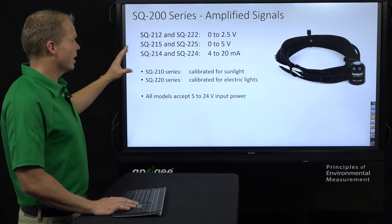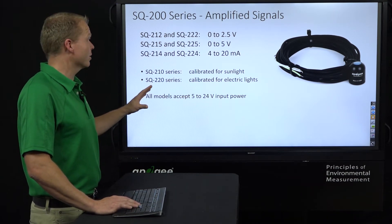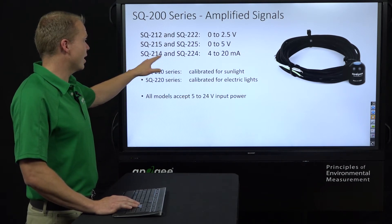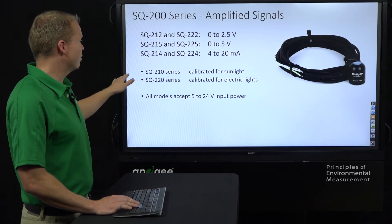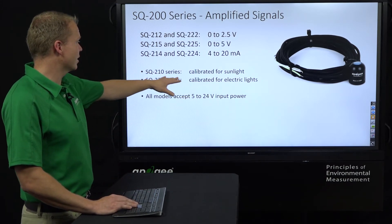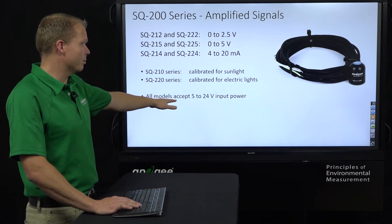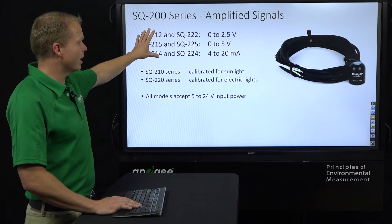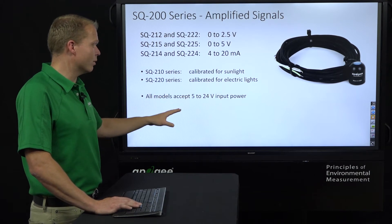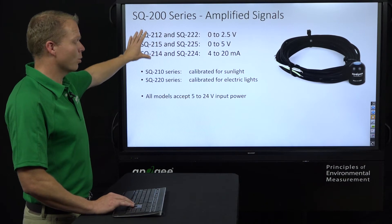The SQ200 series takes that same sensor and amplifies it into a voltage usable on your logger. The 212 and 222 output 0 to 2.5 volts; the 215 and 225 output 0 to 5 volts; and the 214 and 224 output 4 to 20 milliamps. The 210-series models are for sunlight, and the 220-series for electric lights. These all need to be powered — between 5 and 24 volts — and the sensor will automatically regulate and give the output accordingly.